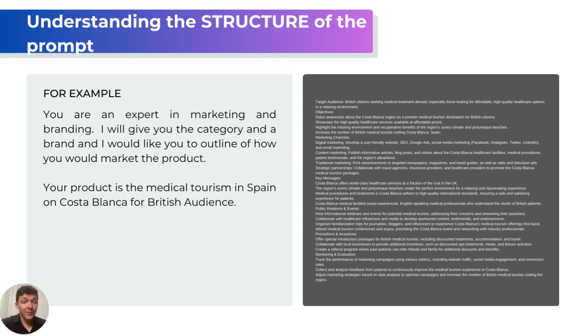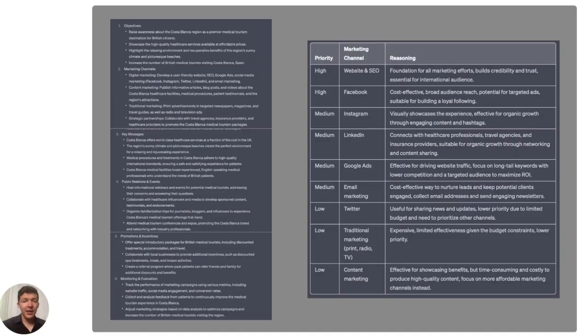So how do we actually improve upon it? Here's my proposed second version of this prompt: 'You're an expert in marketing and branding. I'll give you the category and brand and I would like you to outline how you would market the product. Your product is medical tourism in Spain on Costa Blanca for a British audience.' As you can see, it actually gives quite a lot of information — way more structured and way more specific to the actual core of the product. On the next slide you can see this information even more expanded, giving points on six key areas: objectives, marketing channels, key messages, public relationships, promotions, and monitoring and evaluation.